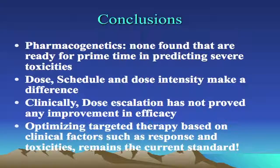My conclusions are that in pharmacogenetics, there are currently no tests ready for clinical use to predict the incidence of severe toxicities in these patients. Additionally, dose schedule and dose intensity — and probably hitting a threshold dose for the individual patient — does make a difference in terms of efficacy. However, when looking at populations in a randomized setting, dose escalation beyond the standard dose has not been proven to offer any improvement in efficacy.